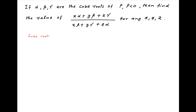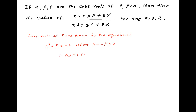The cube roots of P are given by the equation T³ = P. Since P is given to be a negative number, it can be written as minus λ, where λ = −P is a positive number. Since −1 = cos π + i sin π, therefore T³ = (cos π + i sin π) · λ, which can be written as (cos(2rπ + π) + i sin(2rπ + π)) · λ, where r is an integer.